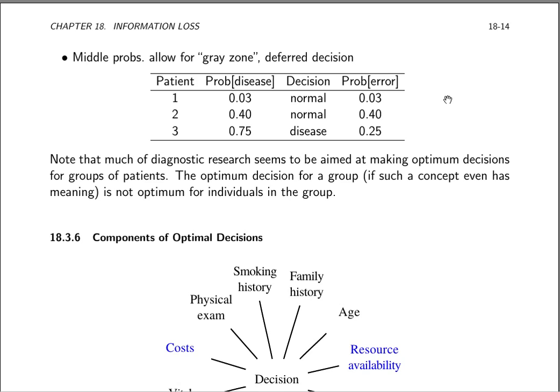When you try to make categorizations and classifications, it's as if the goal is to diagnose and treat groups of patients and not individual patients. The optimum decision for a group, if the concept even is well-defined, is not optimum for individuals in the group.